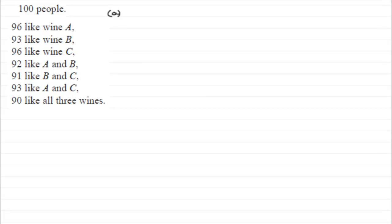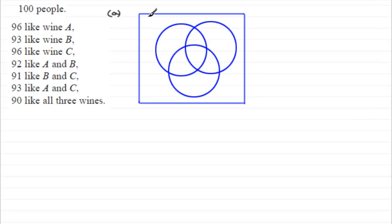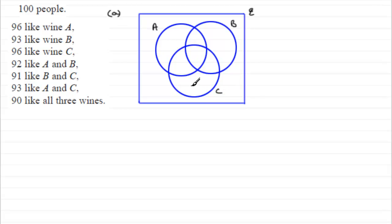For a Venn diagram, I'm going to draw my outer rectangle which represents all the people in the survey — 100 people. I'd normally give that symbol something like a squiggly E, the everything set, the universal set. And then we've got the different wines A, B, and C, so I would have three circles. You don't have to draw circles; you can draw any overlapping shapes that you like. Label them A, B, and C, and then we've just got to start putting in the various numbers in the correct regions.